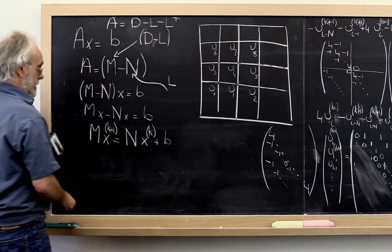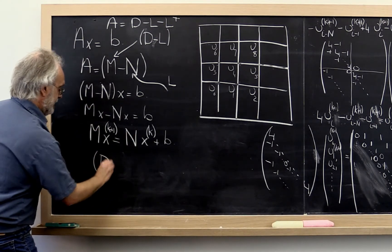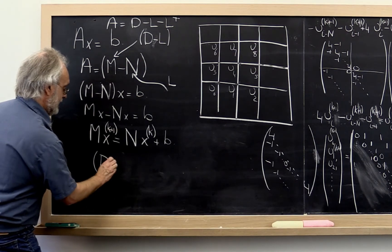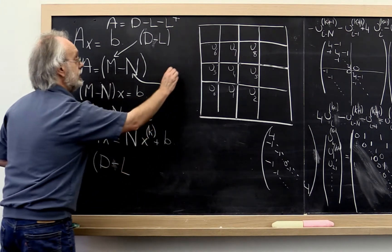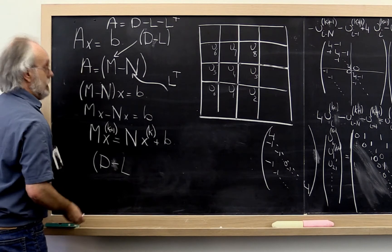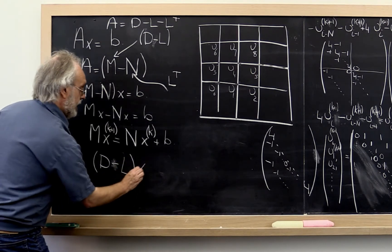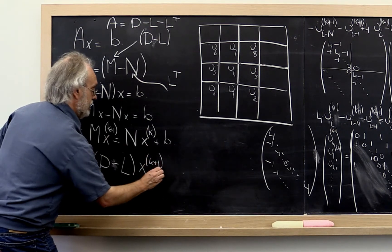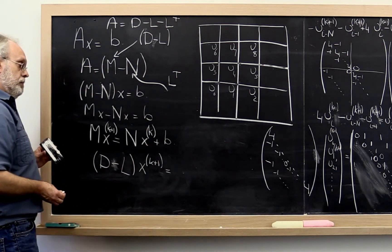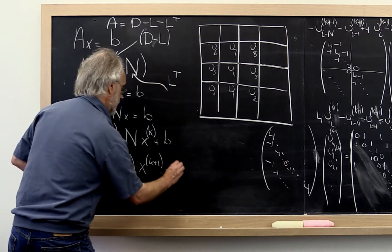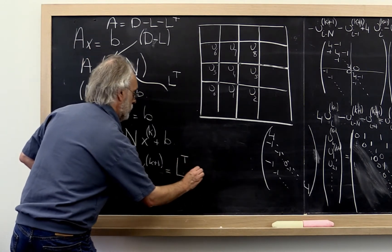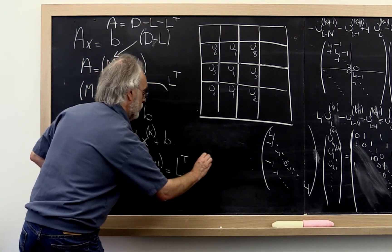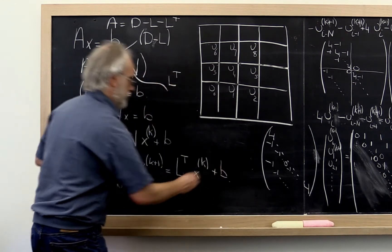So this iteration would say take D plus, sorry, minus L, well that's actually L transpose, and solve this, not solve it. But perform this iteration instead.